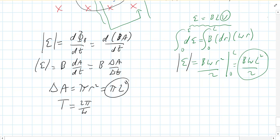So I have my delta A. It's pi L squared. And I have my delta time. It's 2 pi over omega. I'm going to put those in. So the magnitude of the EMF is b times pi L squared over 2 pi divided by omega.